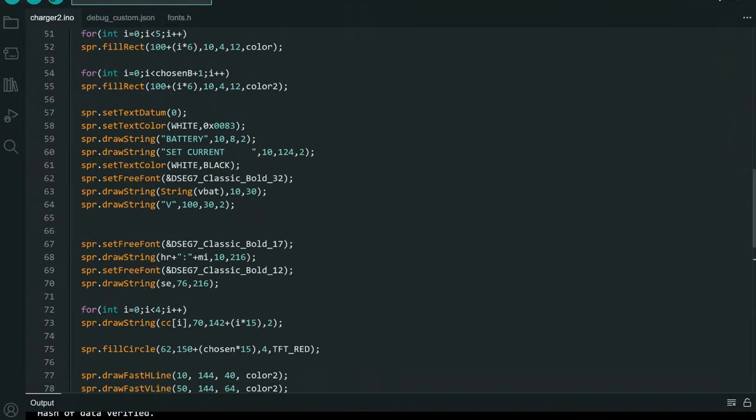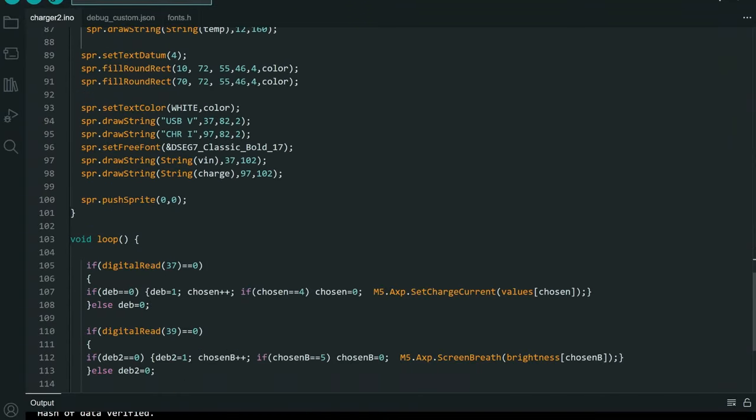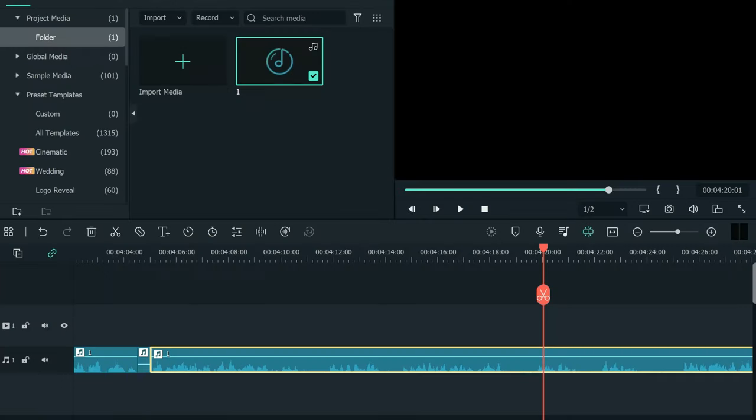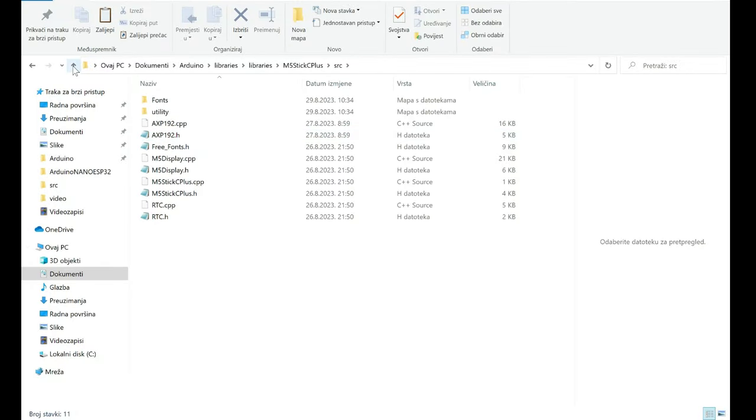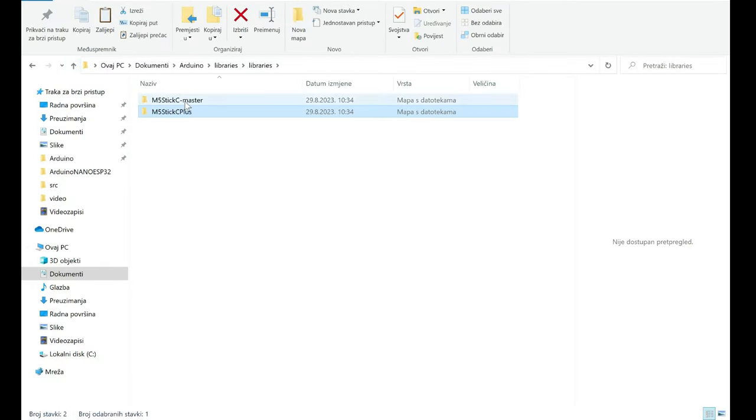You will copy and paste it in M5 Stick C Plus map. So you will replace these two with this one from this folder.